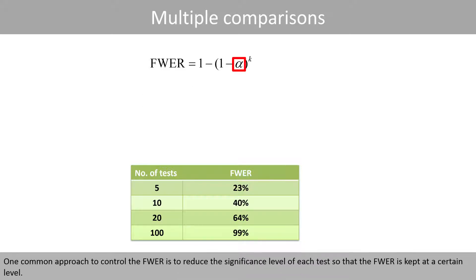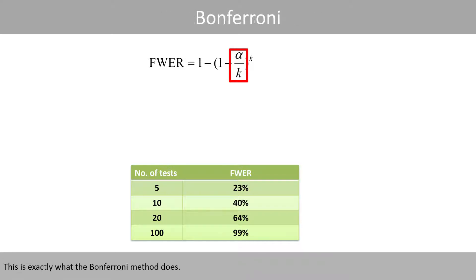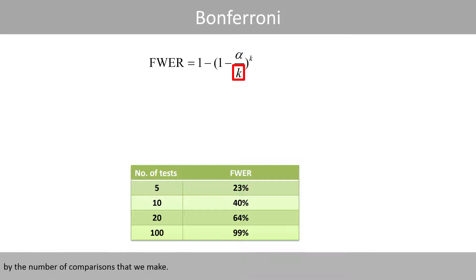One common approach to control the family-wise error rate is to reduce the significance level of each test so that the family-wise error rate is kept at a certain level. This is exactly what the Bonferroni method does: the significance level is reduced by dividing the original significance level by the number of comparisons that we make.